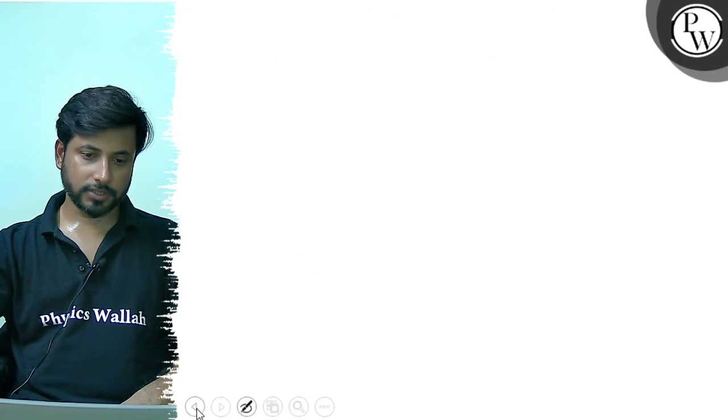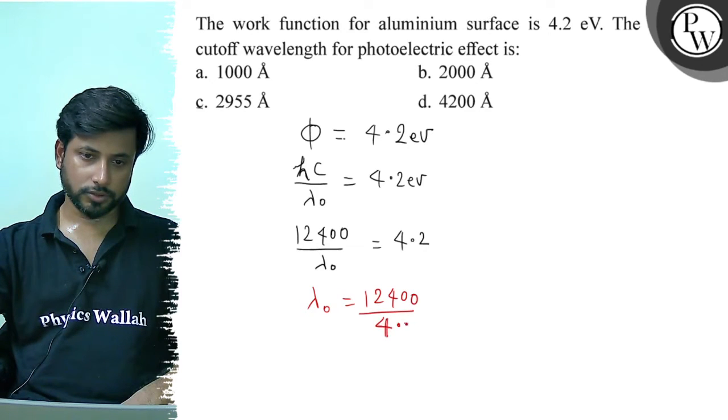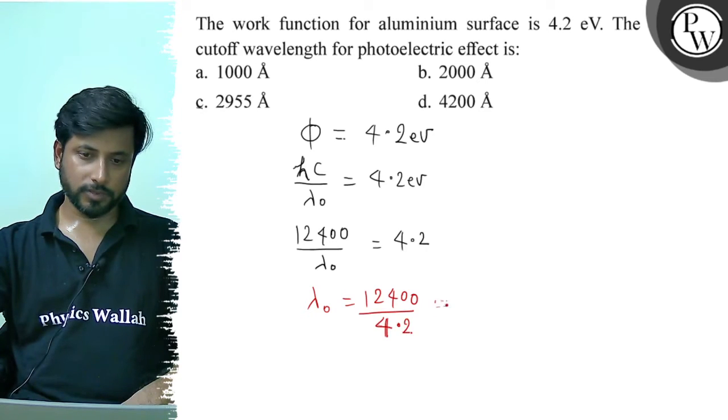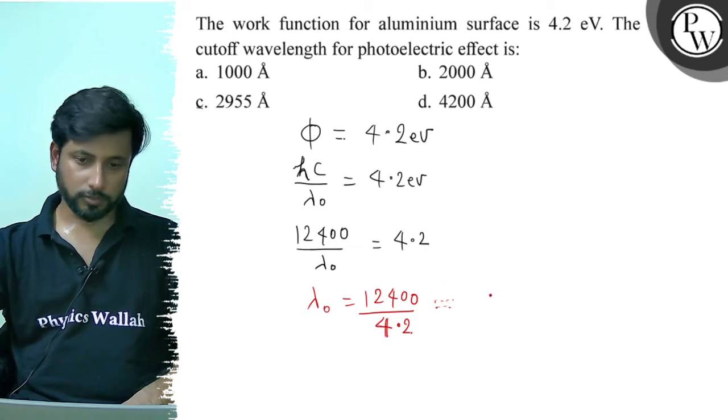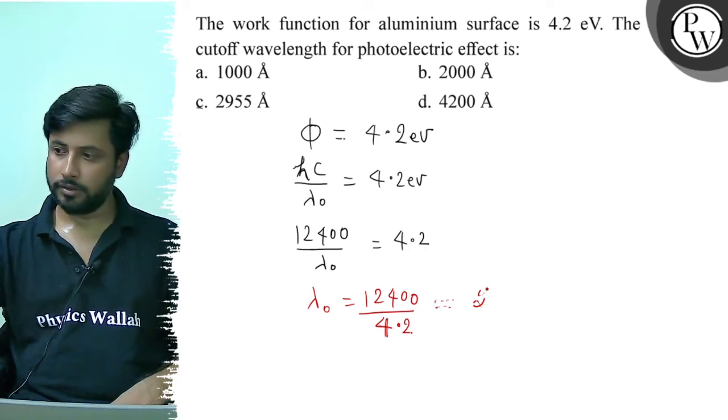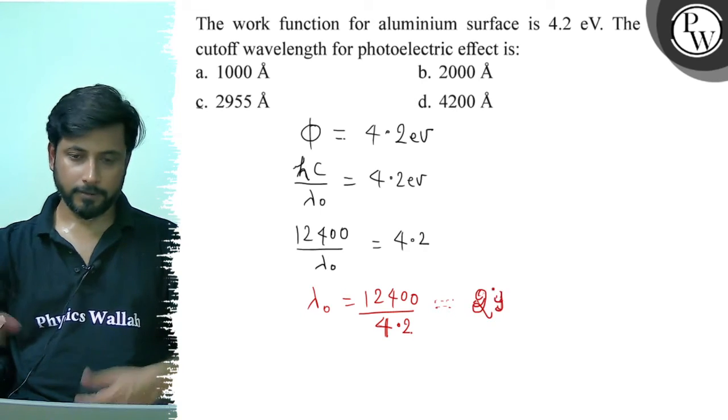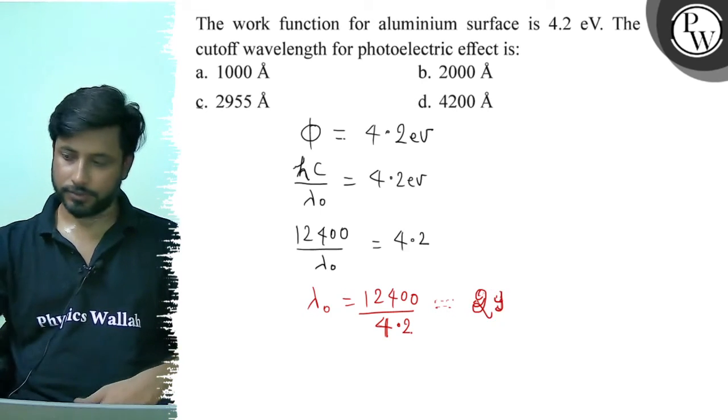So, lambda 0 equals 12400 divided by 4.2, which equals 2955 angstrom.